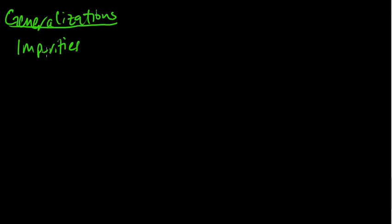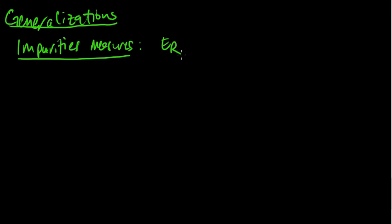So let me discuss different impurity measures. The first one was this E sub R, and that's the misclassification rate in the region R.